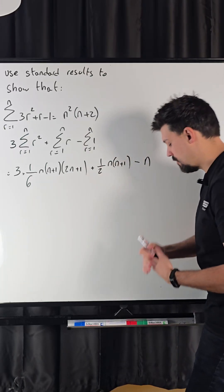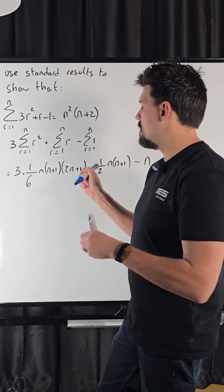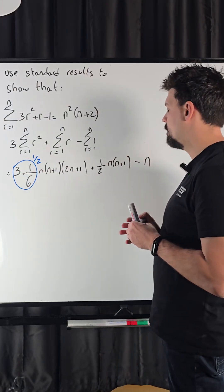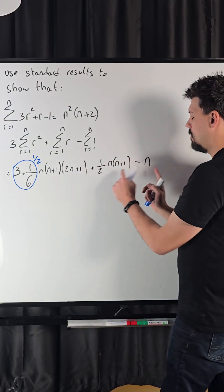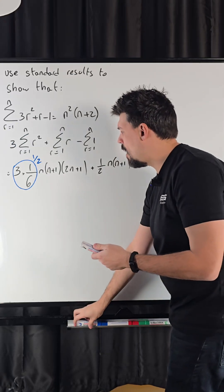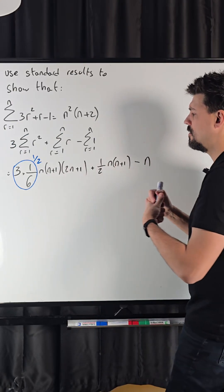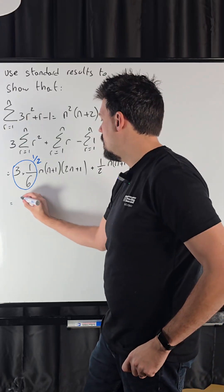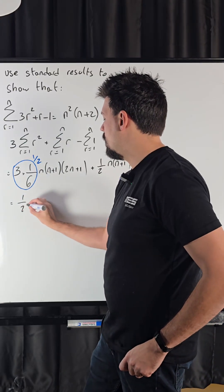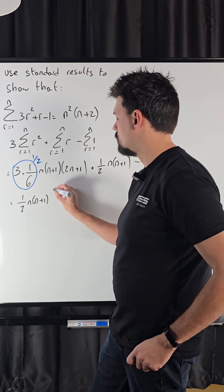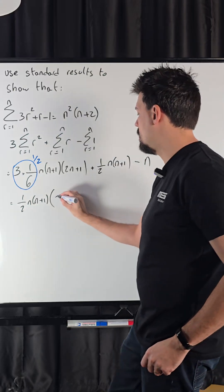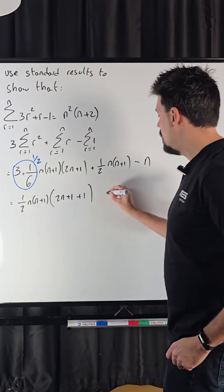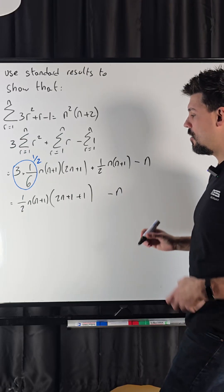A few things to note here. Let's make our lives nice and easy. They've both got a half, an n, and an n plus 1, so I'm going to factorize that out. What do I have left? I have 2n plus 1, and then I have plus 1 from that term. Don't forget our cheeky little minus n knocking about.